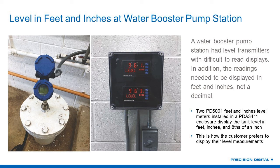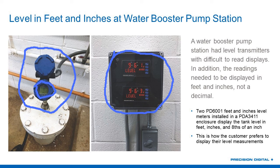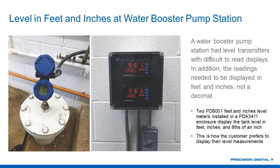So in this particular example, what the customer had was a guided wave radar here, and it's a little bit hard to see the display. That's where we come in with a Precision Digital meter — and as I said, this is in feet and inches. We do have it mounted in our PD-3411 enclosure. That particular enclosure not only mounts both of these meters, but it does have a cover over it. It's a really common enclosure used in water and wastewater plants because it gives you a little bit of extra protection from spills and splashes on the meter itself.